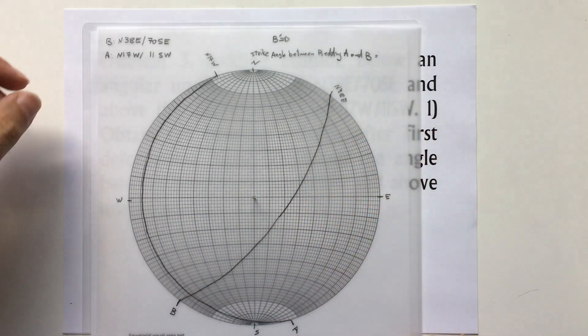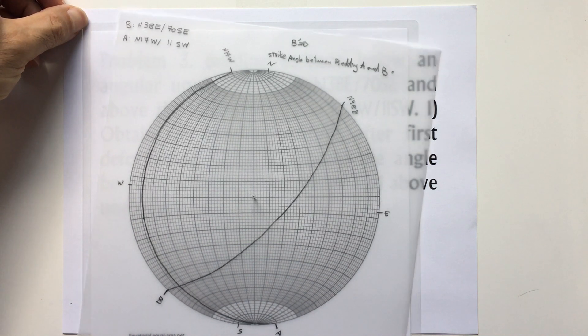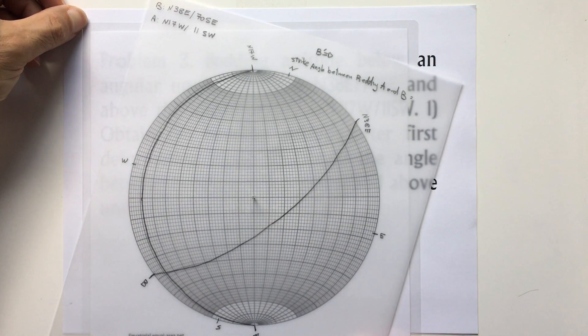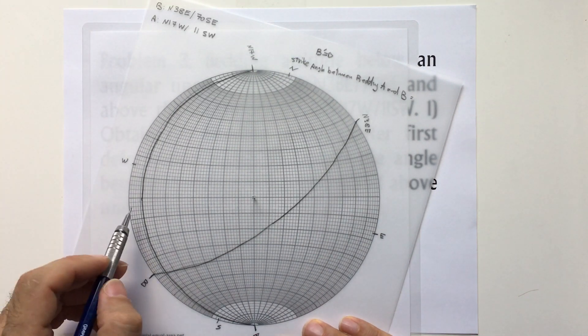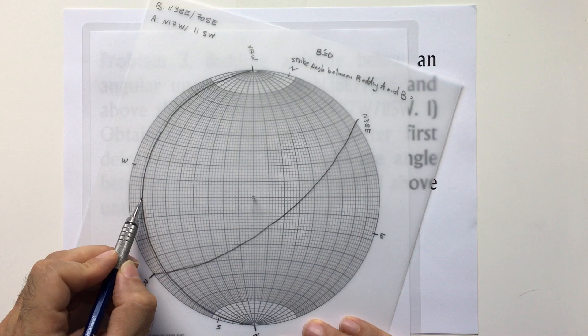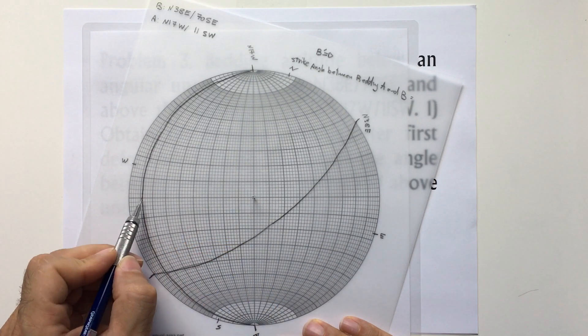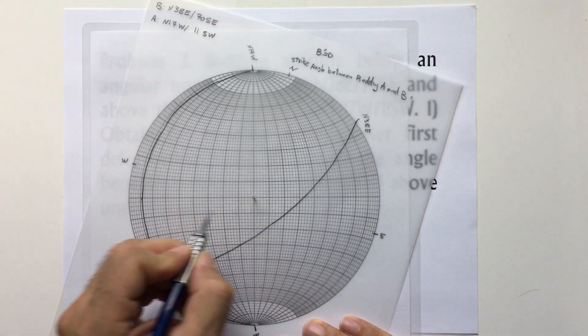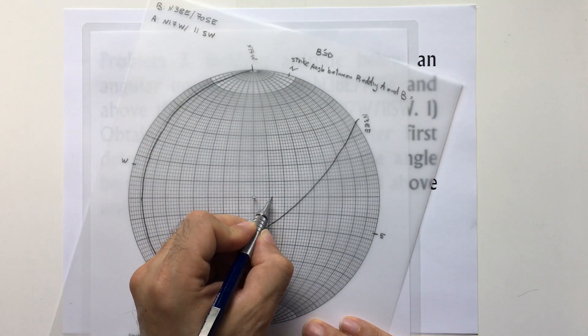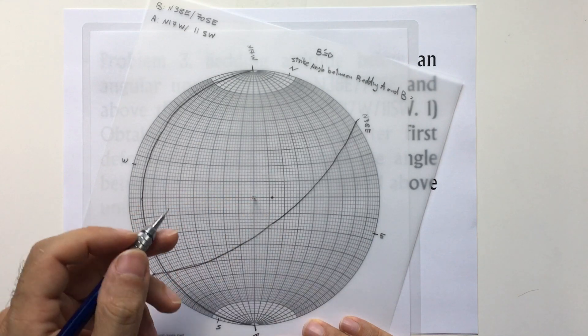You could plot the poles at the same time when you draw the trace, but I'm going to do it this way. The pole of this, 11 degrees from the center, or you can count 90 degrees off from the trace. I'm going to go with 11. This is the pole of A.